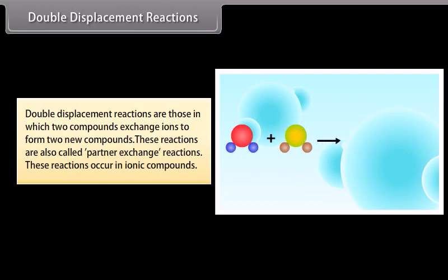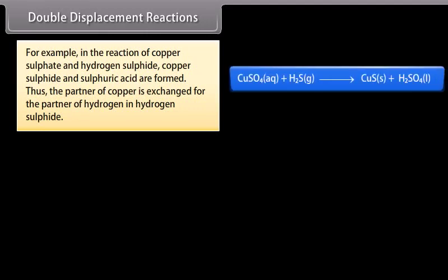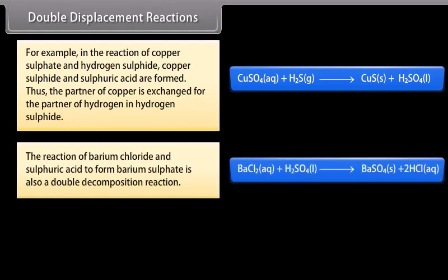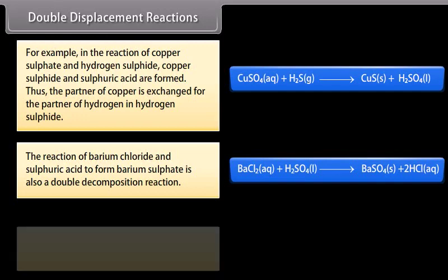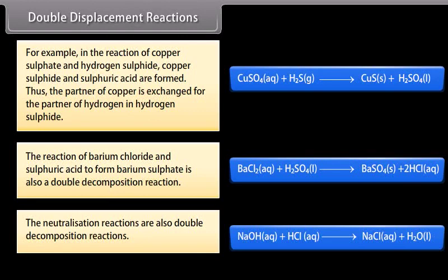Double displacement reactions. Double displacement reactions are those in which two compounds exchange ions to form two new compounds. These are also called partner exchange reactions and occur in ionic compounds. For example, in the reaction of copper sulfate and hydrogen sulfate, copper sulfate and sulfuric acid exchange partners. The reaction of barium chloride and sulfuric acid to form barium sulfate is also a double displacement reaction. Neutralization reactions are also double displacement reactions.